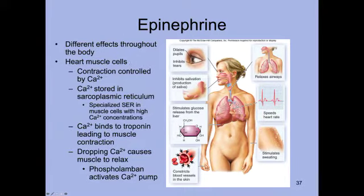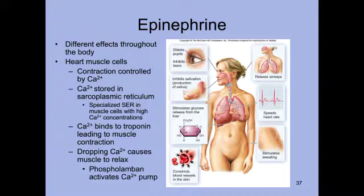Cardiac cells' contraction is controlled and regulated by calcium ions. Calcium ions are stored in a specialized part of the smooth endoplasmic reticulum found in muscle cells called the sarcoplasmic reticulum, which has a very high concentration of these ions. These calcium ions will bind to a molecule called troponin, and when they bind to troponin, it leads to muscle contraction. As calcium ion concentration decreases, the muscle relaxes, and a molecule called phospholamban is released, activating the calcium ion pump to pump ions back into the sarcoplasmic reticulum.